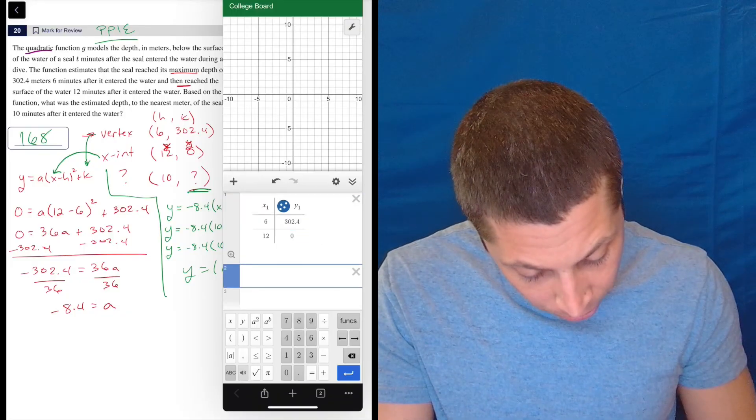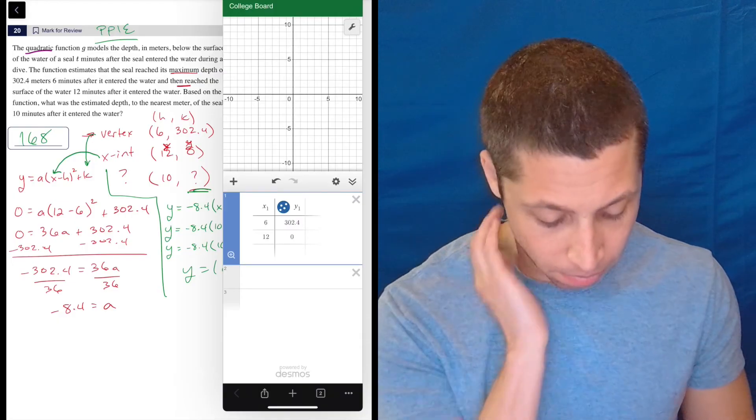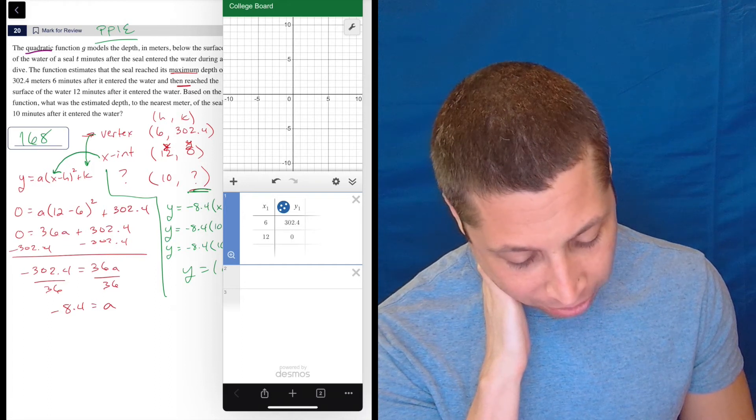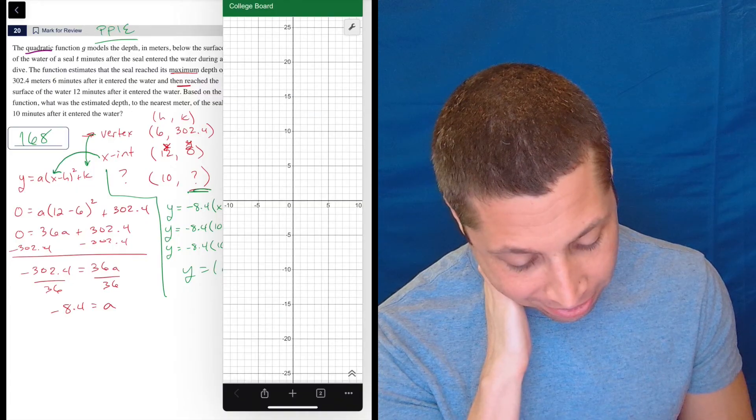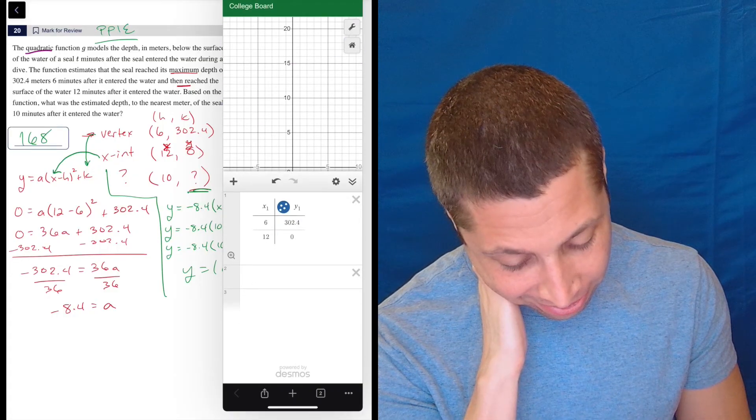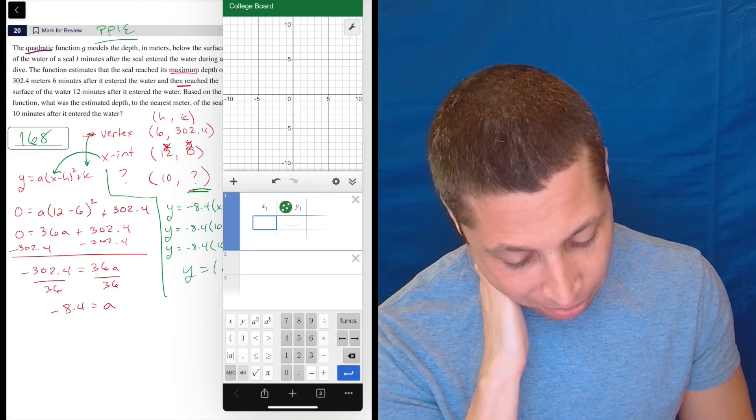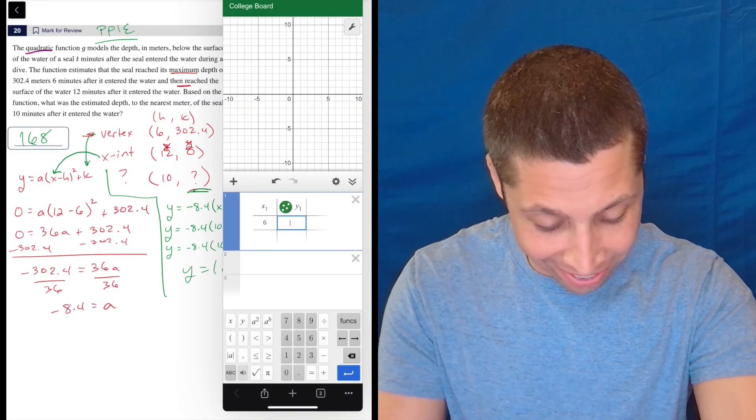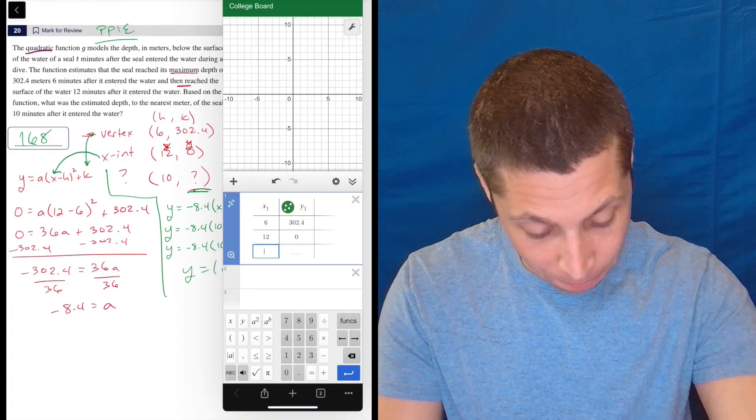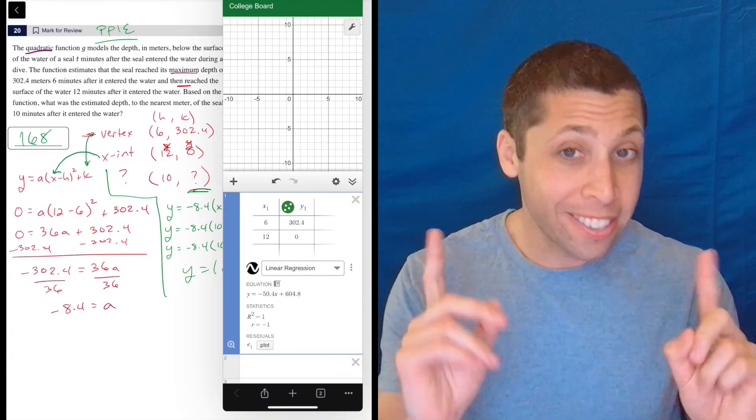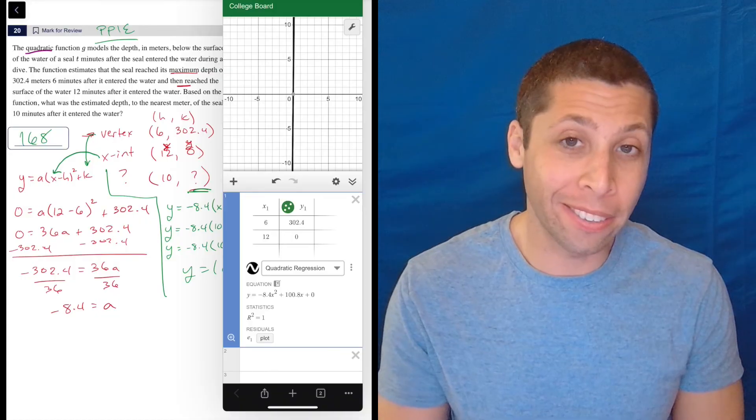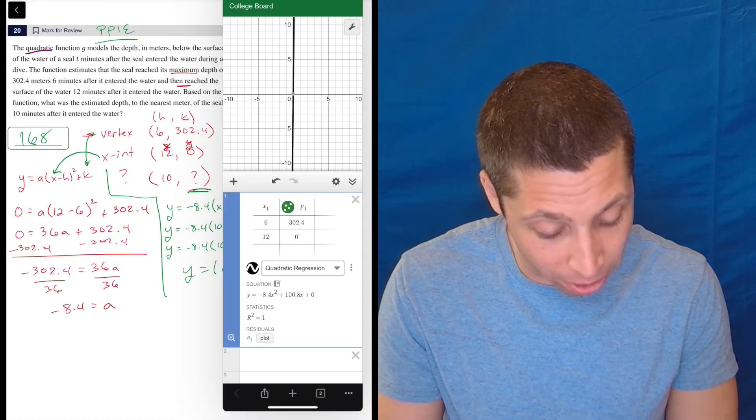And now Desmos has this... it's supposed to have, I don't know why it doesn't have, there's supposed to be a button here that allows me to do a regression. Why isn't the button there? What happened? What if I refresh the page? Okay. Table. Let's try that again. So 6, 302.4, 12, 0. Oh, now it pops up.